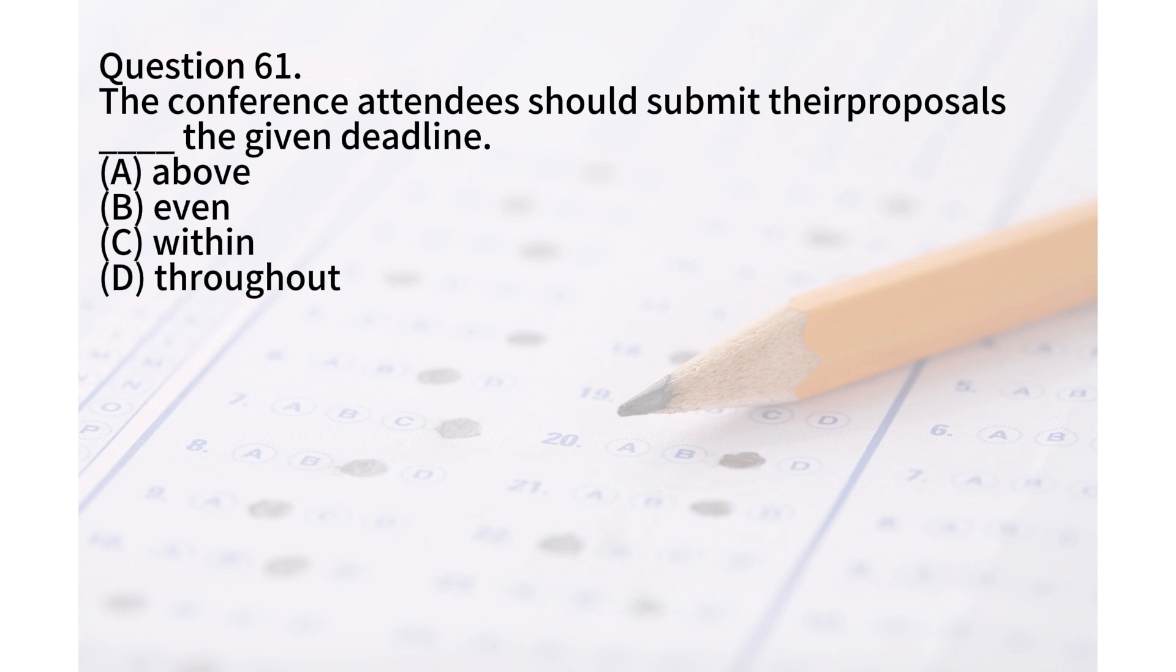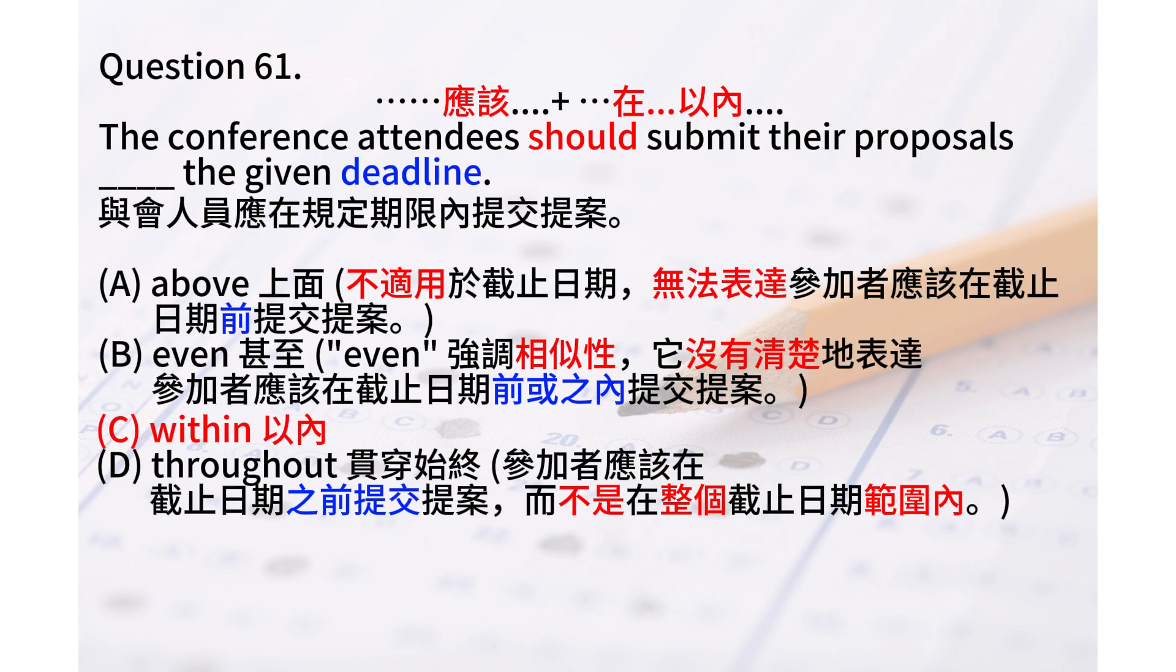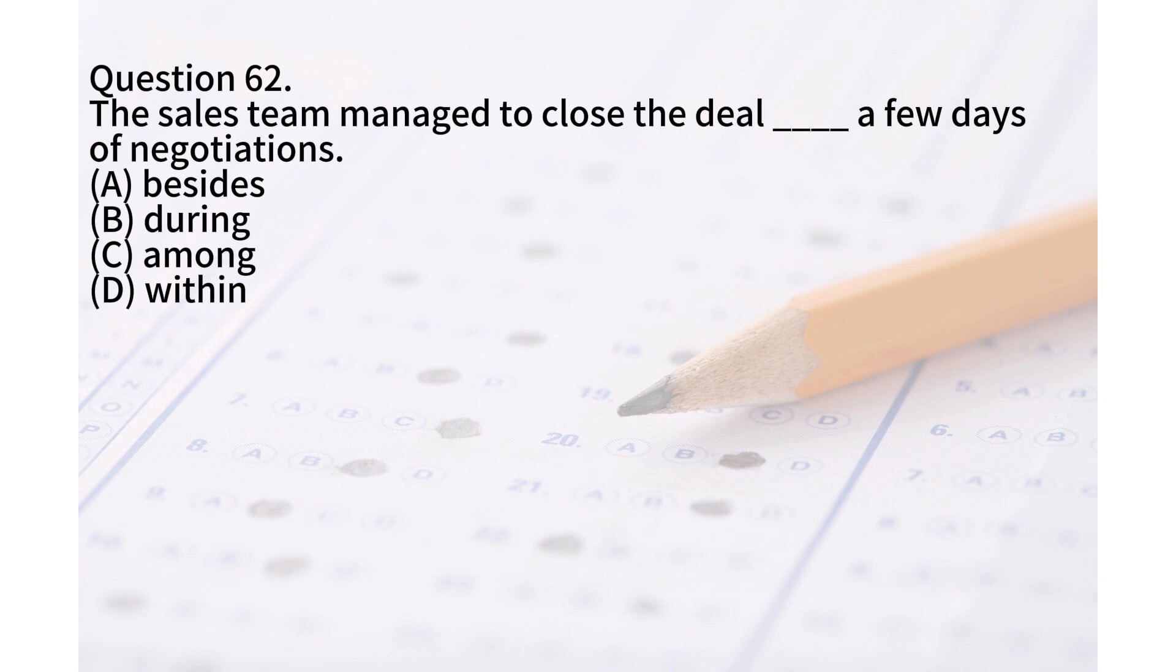The answer is C: within. Question 62: The sales team managed to close the deal (A) besides, (B) during, (C) among, (D) within a few days of negotiations.